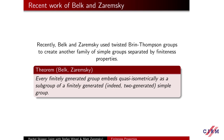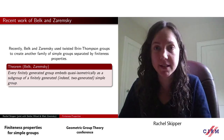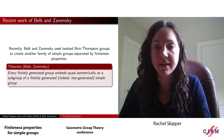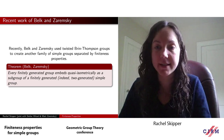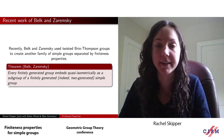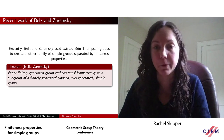I would be remiss if I didn't mention some recent work of Belk and Zaremsky that builds on this. Recently, Belk and Zaremsky used what we call twisted Bren-Thompson groups to create another family of simple groups separated by finiteness properties. They used this construction to actually answer a question of Bridson from the 90s, proving that every finitely generated group embeds quasi-isometrically as a subgroup of a finitely generated, indeed a two-generated, simple group.